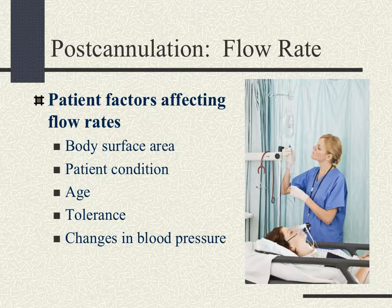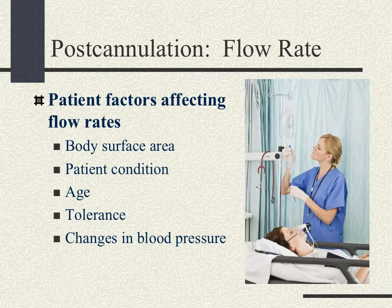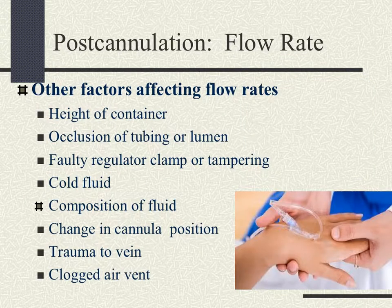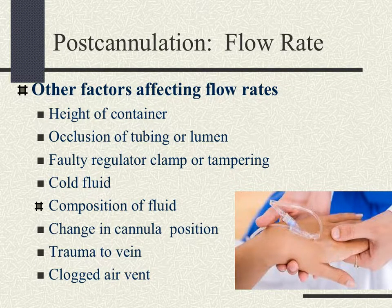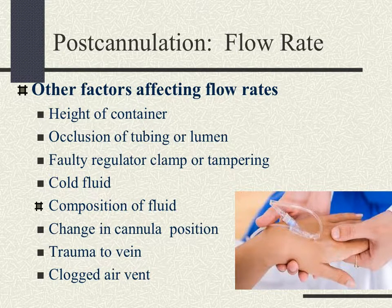Other factors affecting flow rate include the height of the container, occlusion of tubing or lumen, faulty regulator clamps or tampering, cold fluid, the composition of fluid, change in cannula position, trauma to the vein, and a clogged air vent. Slower rates — such as keep vein open (KVO) — may be difficult to maintain if the patient has high blood pressure, as gravity drip may not be able to overcome it, so you may need a pump. Keep in mind that thicker fluids run slower and warm solutions drip faster than cold ones.